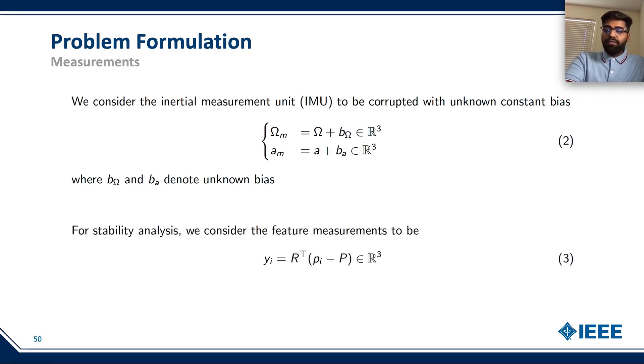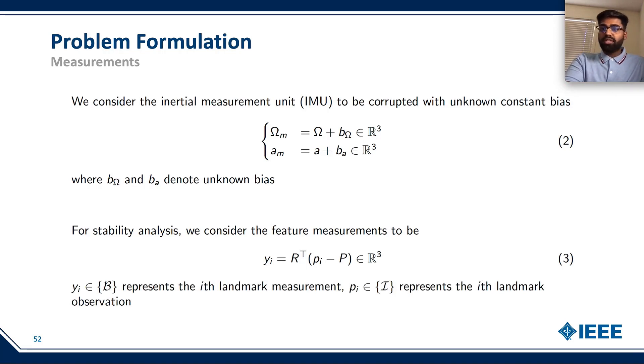We have a set of feature measurements available, which is v i, which denotes the landmark or the feature measurement, and p i, which represents the landmark or the feature observation.